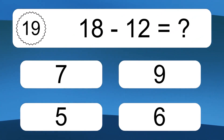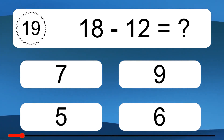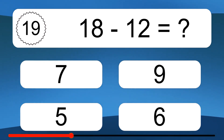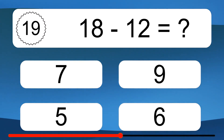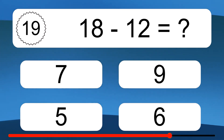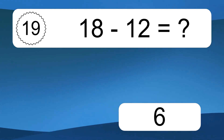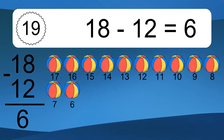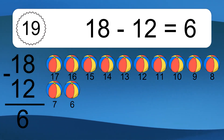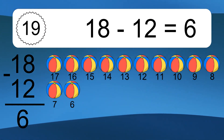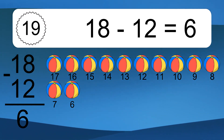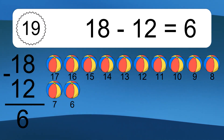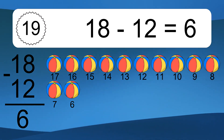18 minus 12 equals what? 18 minus 12 equals 6. Let's count it. 17, 16, 15, 14, 13, 12, 11, 10, 9, 8, 7, 6.